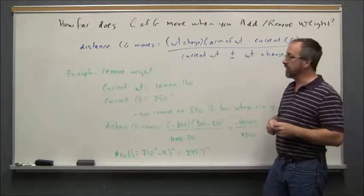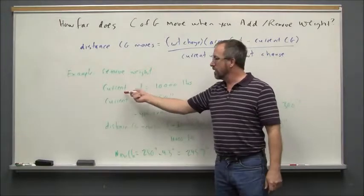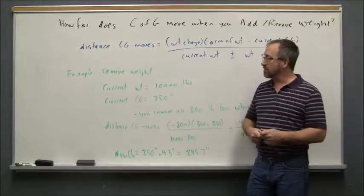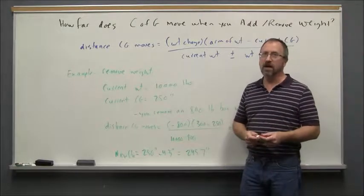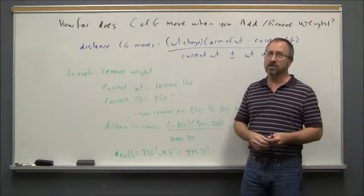In this example we'll look at removing weight. We did this one in class. Current weight of the aircraft is 10,000 pounds and its current center of gravity is 250 inches. Again, I just made these numbers up for math - they're not necessarily based on any specific aircraft.